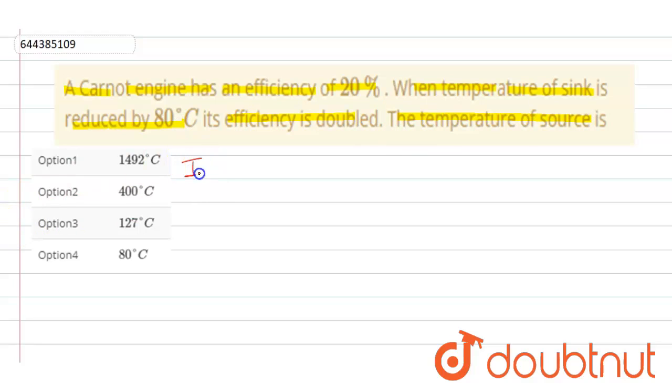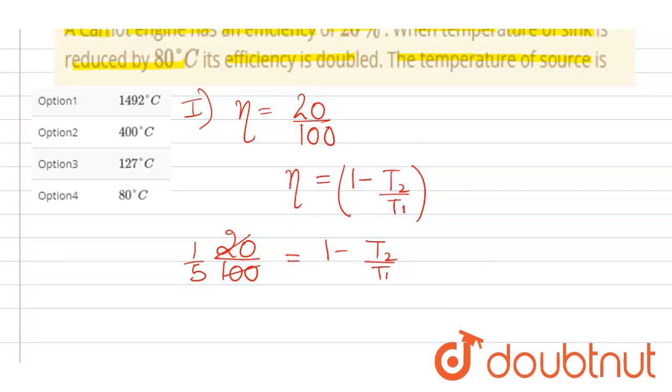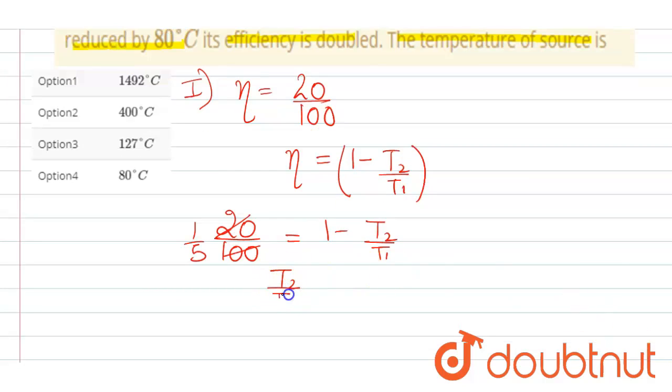So in first condition, the efficiency is given, that is 20 percent. Now we know the formula of efficiency is 1 minus T2 upon T1. So putting the value here, we get 20 upon 100 equals 1 minus T2 upon T1. So it will be 1 upon 5. Now shifting, we get T2 upon T1 equals 4 by 5. Assume it to be first equation.